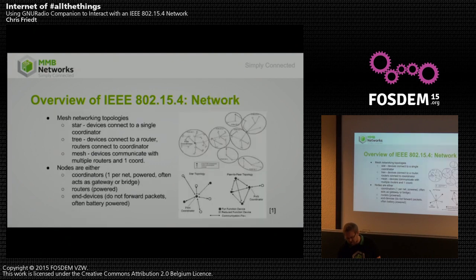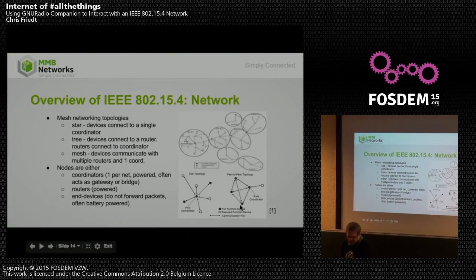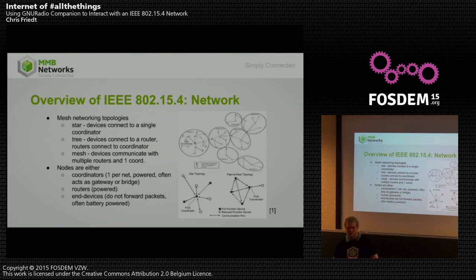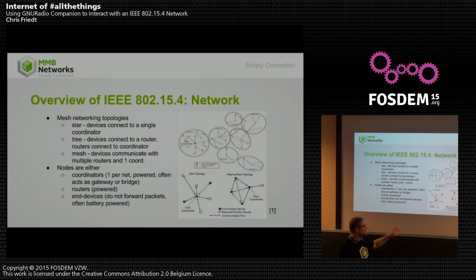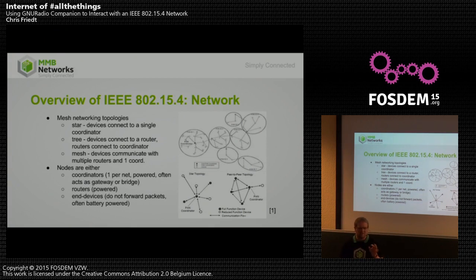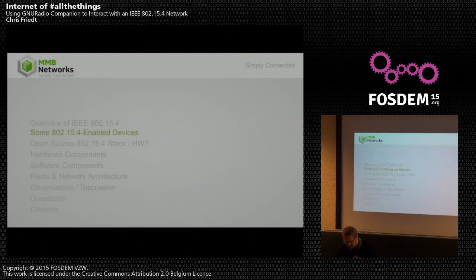Zigbee is a mesh network with star, regular mesh, and tree topologies. There's usually one coordinator per network, plus routers and end devices. End devices are usually battery-powered — you'll find battery-powered switches you can stick on a wall. Some switches are mechanically actuated, generating electricity just by pushing the button. Most of these little devices run a Cortex M0 or M3.